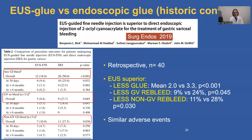This is a historic comparison of EUS-guided glue versus endoscopic glue from Indiana University — retrospective, 40 patients. EUS-guided treatment was found to be superior in that less glue was required to obliterate the varices, which was statistically highly significant. There was a lower rate of gastric variceal bleeding, also statistically significant, and a lower rate of non-gastric variceal re-bleeding, also statistically significant, with a similar rate of adverse events.